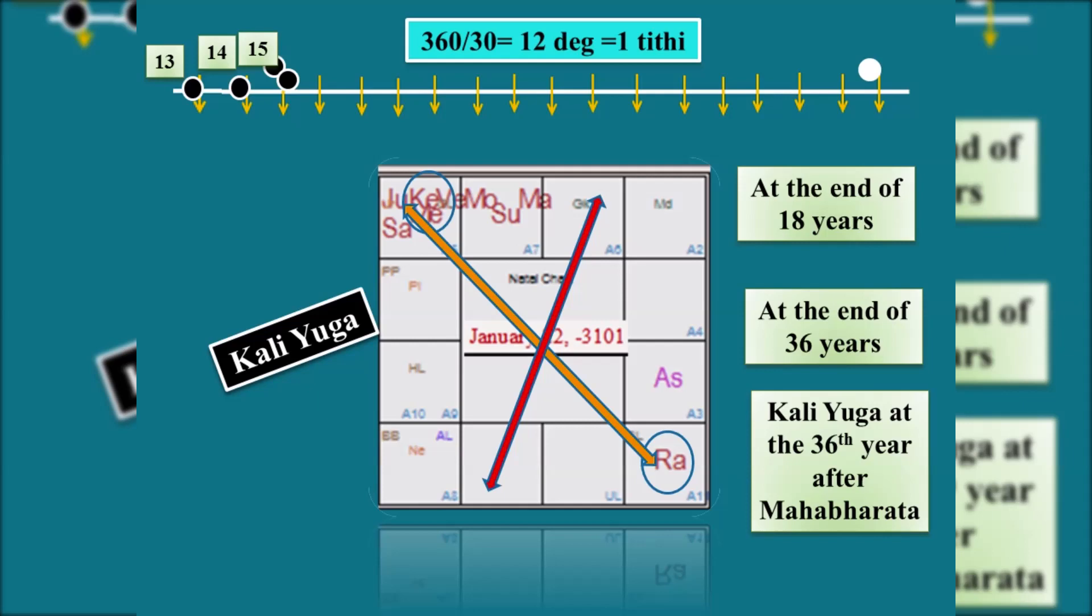Which means the Amavasya started within the segment of the Triodashi and ended within that or after the beginning of the 14th tithi. No connection with 15th tithi.